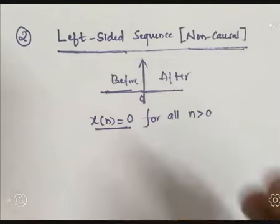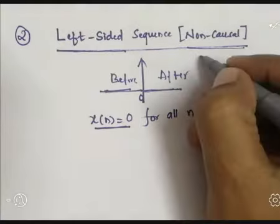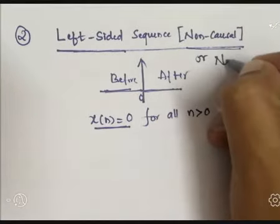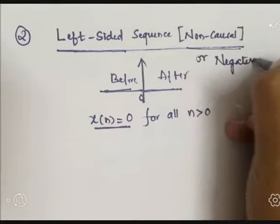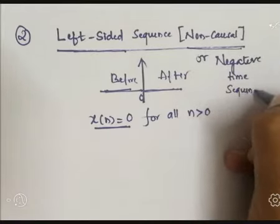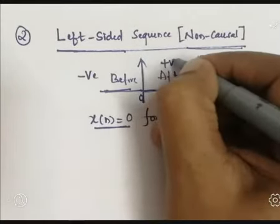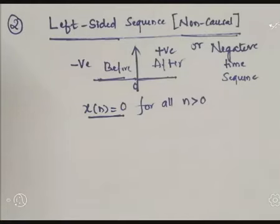That type of sequence is called a left-side sequence, or we can say a non-causal sequence, or we can say a negative time sequence. These are all negative values; these are all positive values. The resulting sequence x[n] is called an anti-causal or non-causal sequence. For such type of sequence, the ROC is...